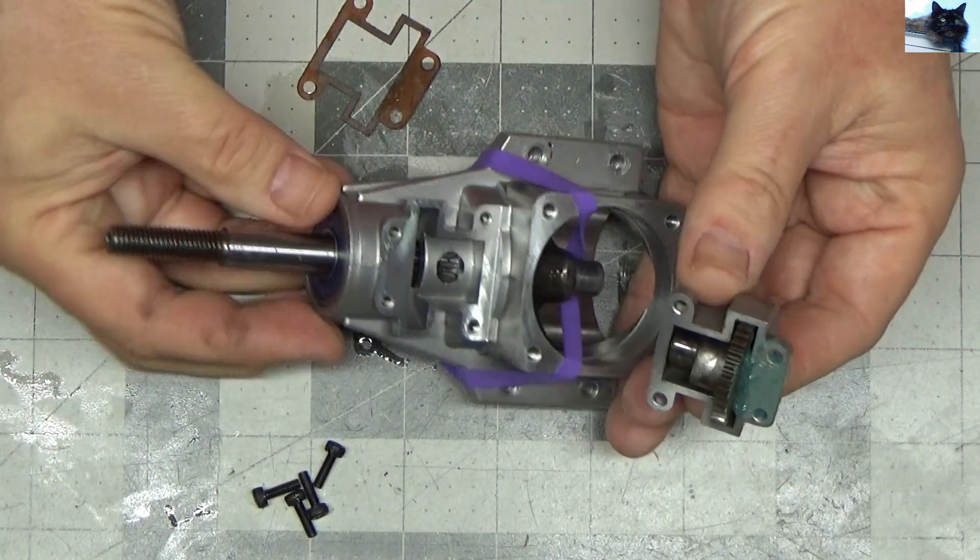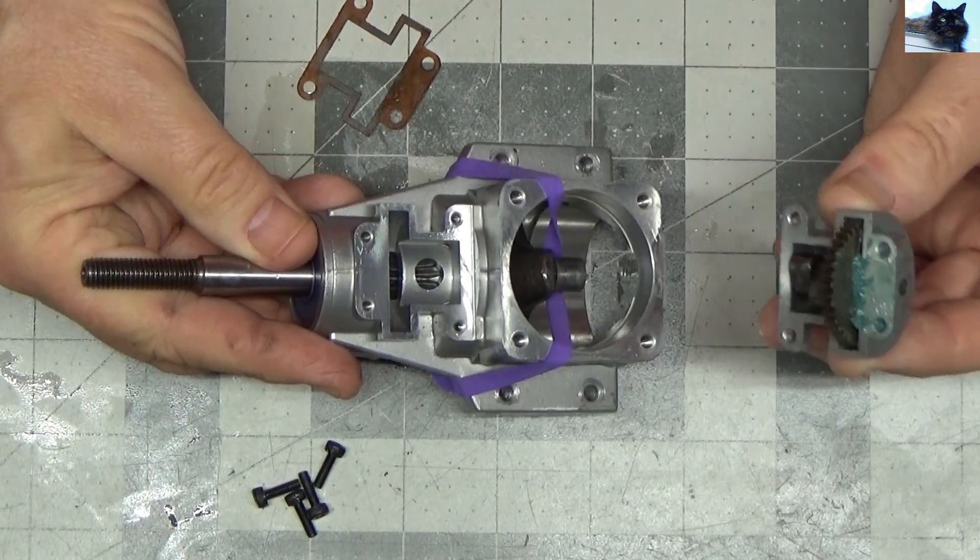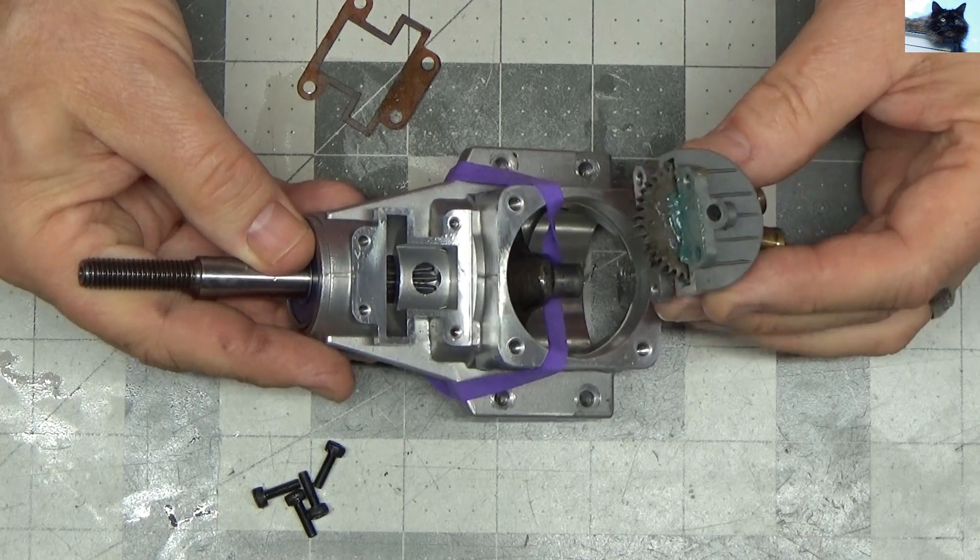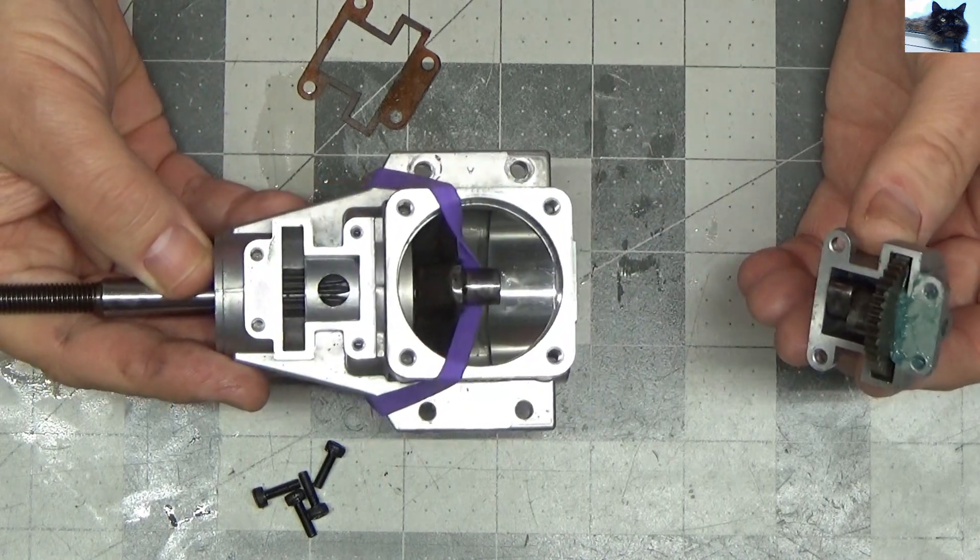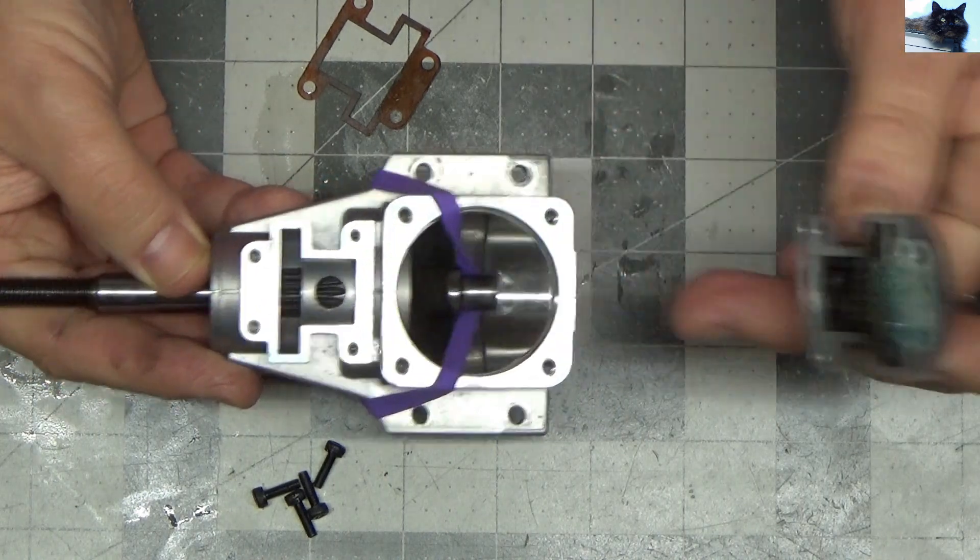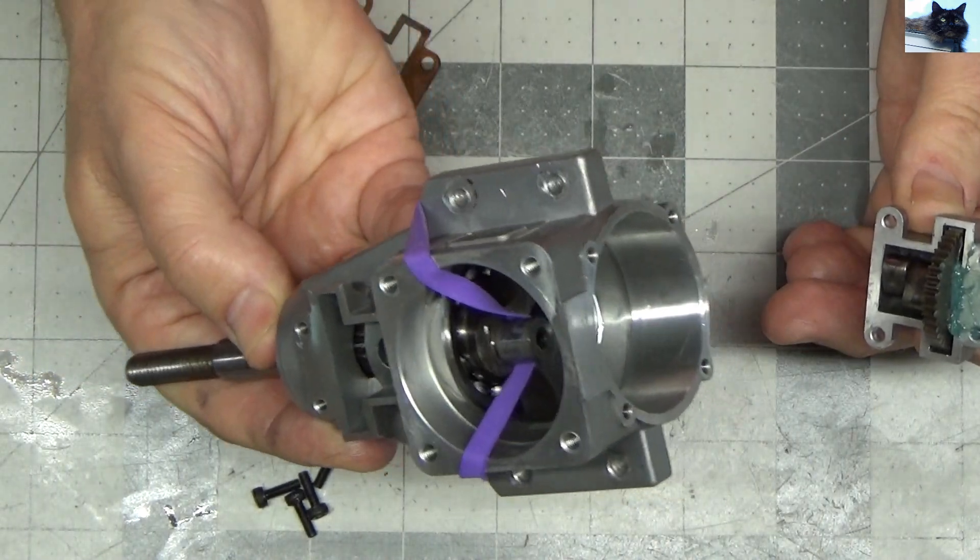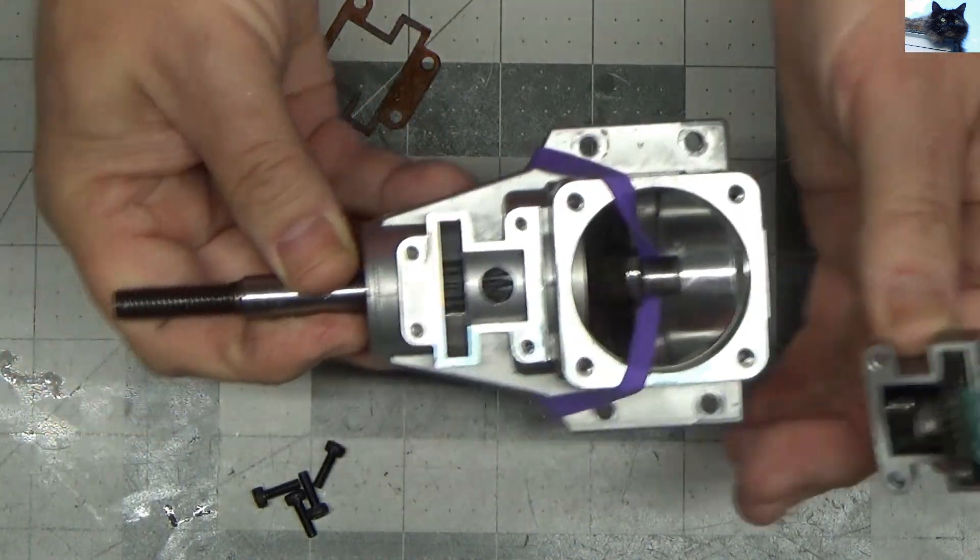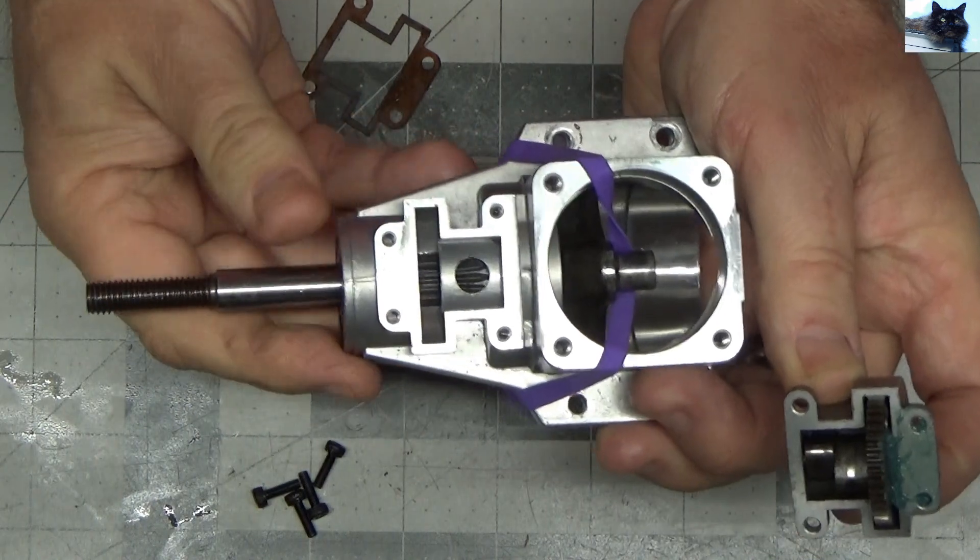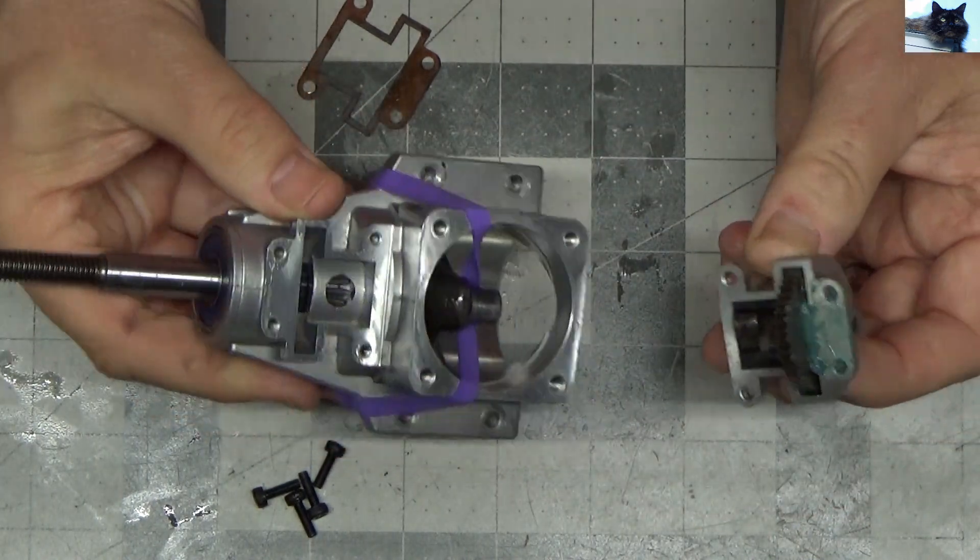The means that I use now that I've discovered a while back to set the timing on these bigger engines is I'll use a rubber band, a pretty stout rubber band, just to hold the crankshaft at top dead center so that's one less thing I have to hold on to.